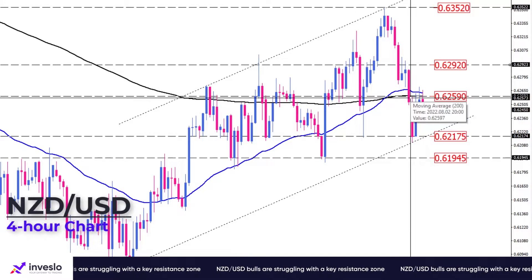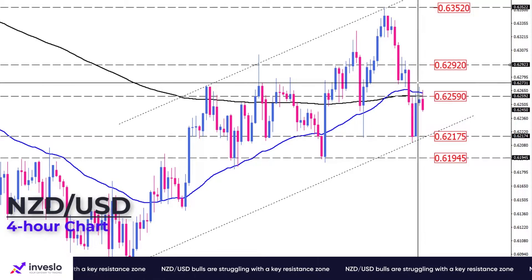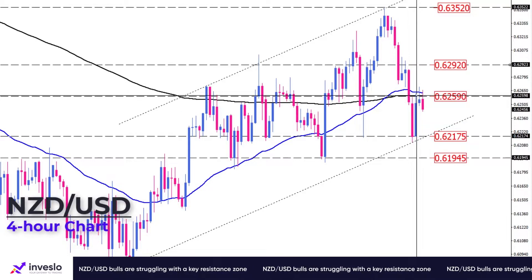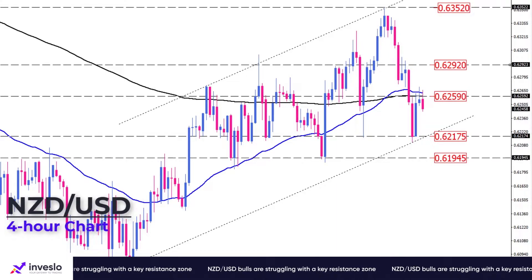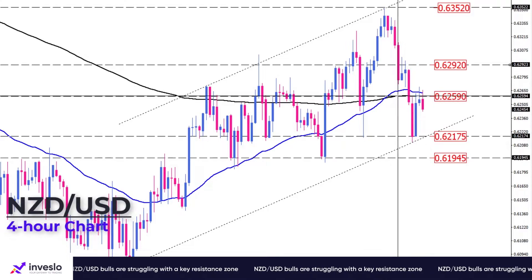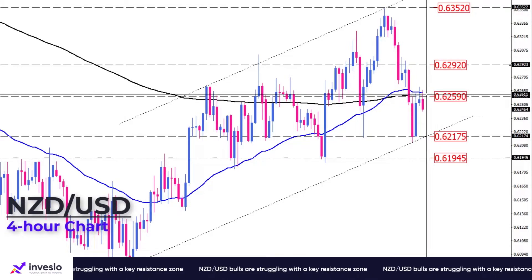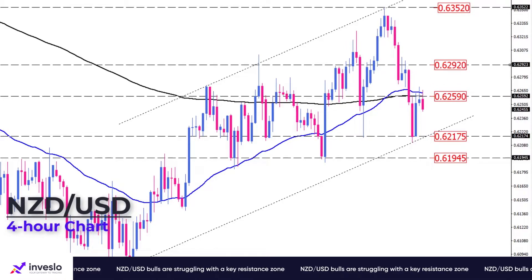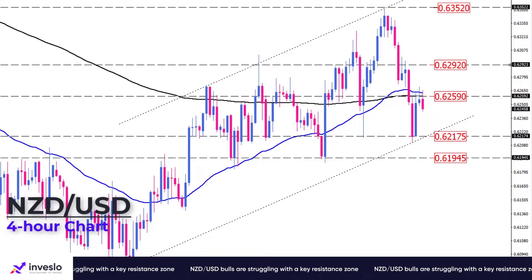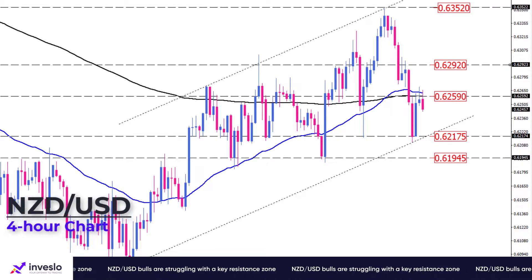However, bulls may keep momentum if upcoming services PMIs this afternoon print weaker than expected numbers, resulting in a weaker dollar. That could support the rally further. By pushing above the EMA zone, we will see a further increase in interest towards the intraday level at 0.62923.